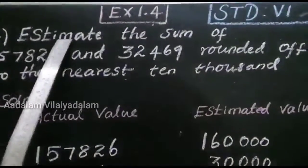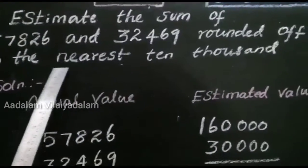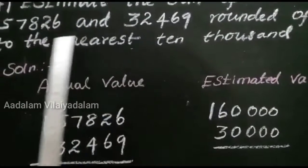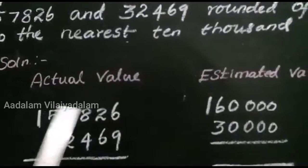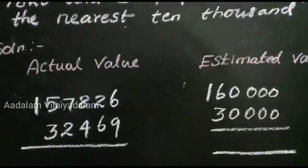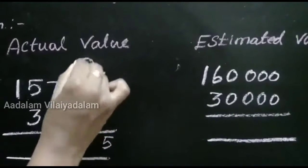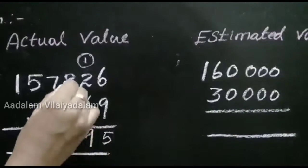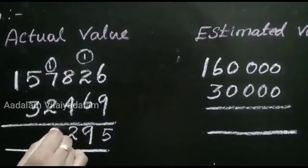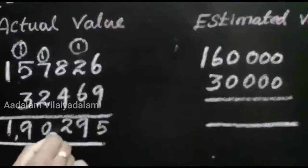Fourth question: estimate the sum of 1,57,826 and 32,469 rounded off to the nearest 10,000 place. First, find the actual sum. 1,57,826 plus 32,469: 6 plus 9 is 15, carry 1; 2 plus 6 is 8, plus 1 is 9; 8 plus 4 is 12, carry 1; 7 plus 2 is 9, plus 1 is 10, carry 1; 5 plus 3 is 8, plus 1 is 9; and 1. The actual sum is 1,90,295.